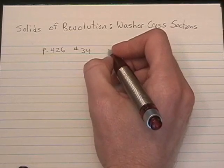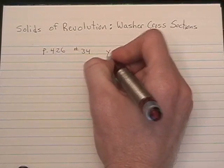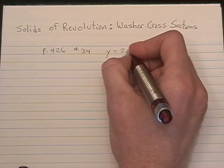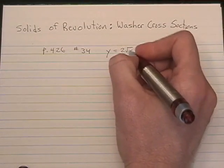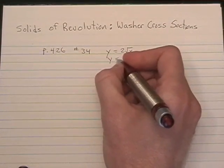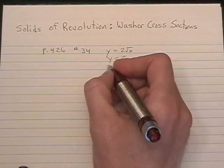We are given a region bounded by y equals 2 times the square root of x, y equals 2, and x equals 0.